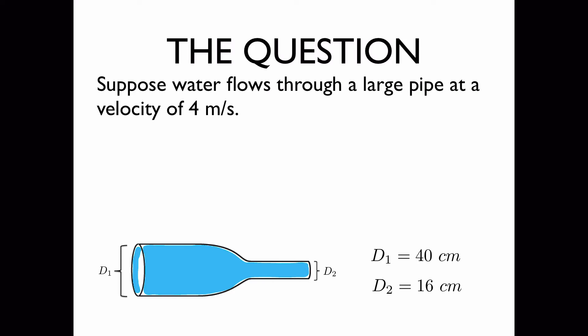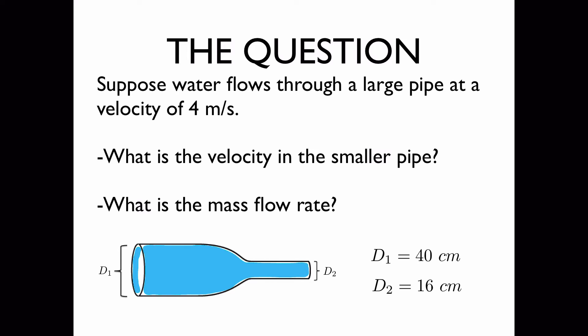Suppose water flows through a large pipe at a velocity of 4 meters per second. We'd like to know what is the velocity in the smaller pipe and what is the mass flow rate, that is how many kilograms are moving through the pipe each second.